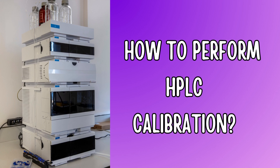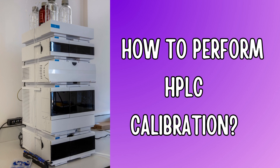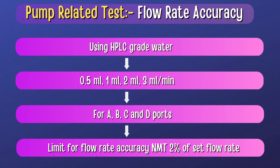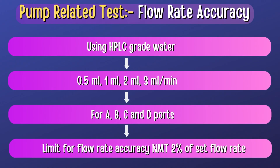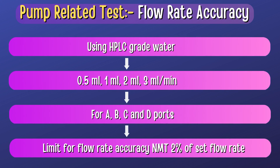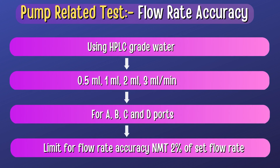Now we will understand how to perform HPLC calibration along with its limits. Flowrate Accuracy and Precision is performed using HPLC grade water, with measurements taken at different flow rates such as 0.5 ml, 1 ml, 2 ml, and 3 ml per minute for all ports A, B, C, and D. The limit for flow rate accuracy should not be more than 2% of the set flow rate.